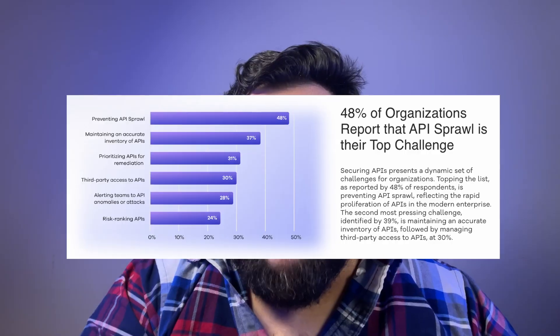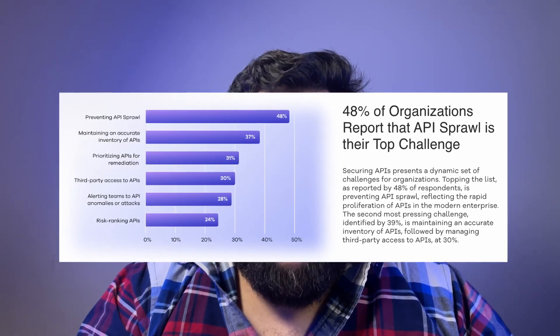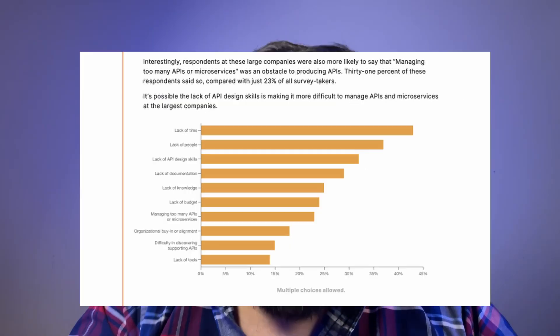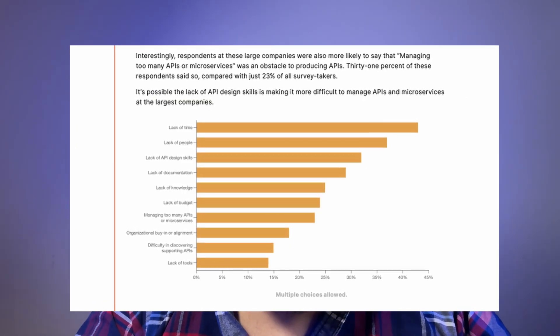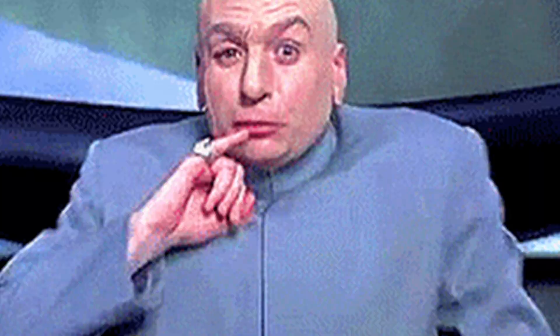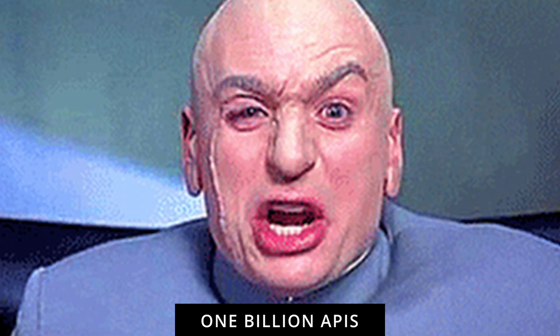So is API sprawl the new shadow IT? Honestly, yeah, and the data backs it up. A study by Traceable found that 48% of organizations said uncontrolled API sprawl was a significant problem. Postman had another study where 31% of respondents said there are just too many endpoints. And a study backed by F5 found that by 2031 there will be one billion services, all with their own APIs and endpoints — a statement that probably just gave every CTO watching this a heart attack.